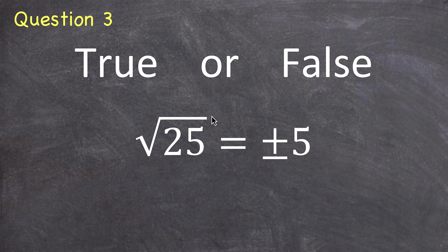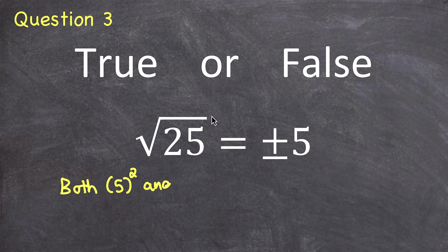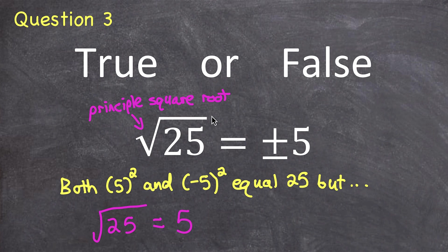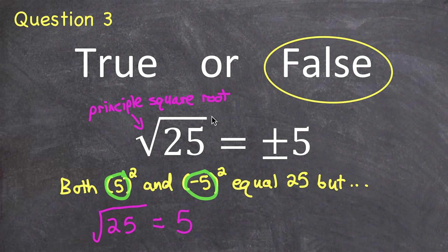Question 3. True or false? The square root of 25 is equal to plus or minus five. Both 5² and (-5)² equal 25, so five and negative five are both square roots of 25. But this square root symbol means we want the principal root of 25 — just the positive square root. So the square root of 25 is just five. If you want both roots, you put a plus or minus in front of the principal square root symbol, giving plus or minus five.